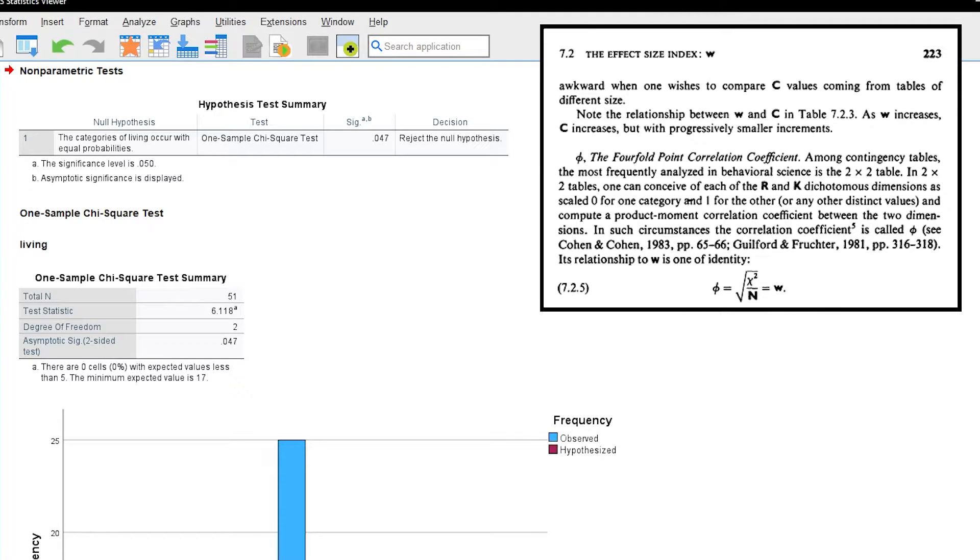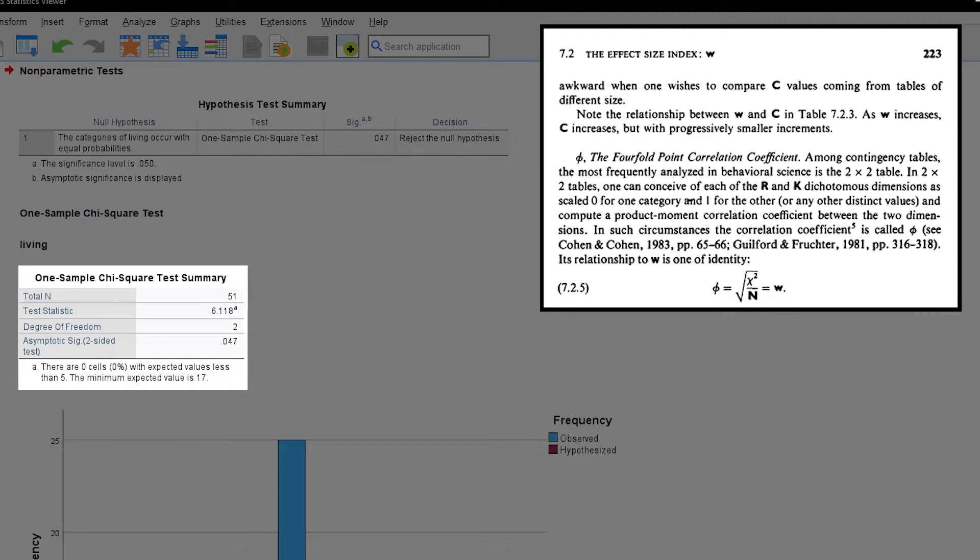When it comes to the SPSS output we have all we need for that calculation. The test statistic is the chi-square value which is 6.118 in my example. The number of observation is total N and 51 in my example.